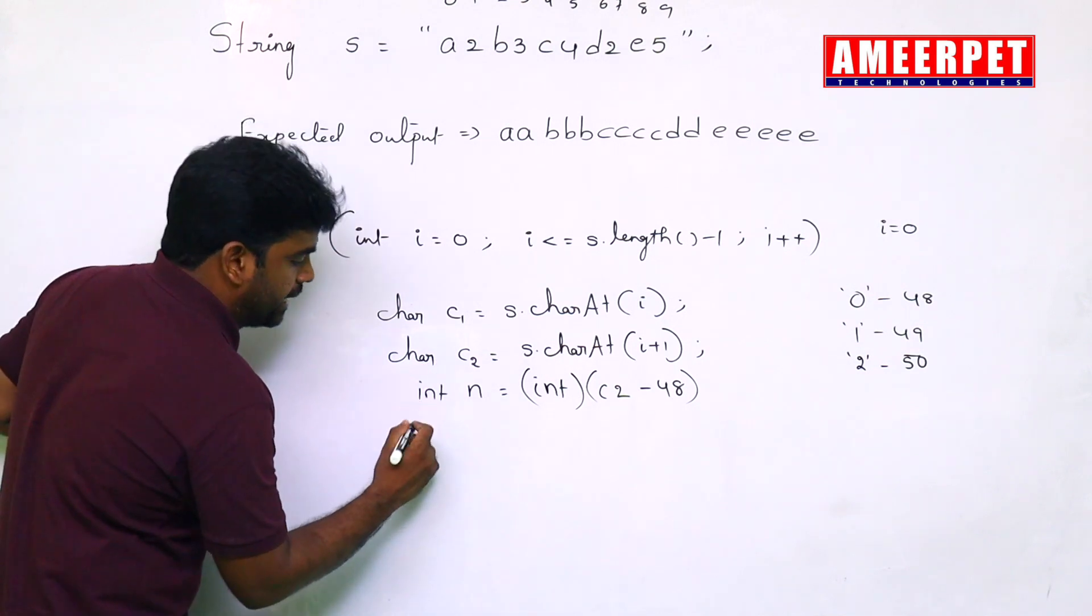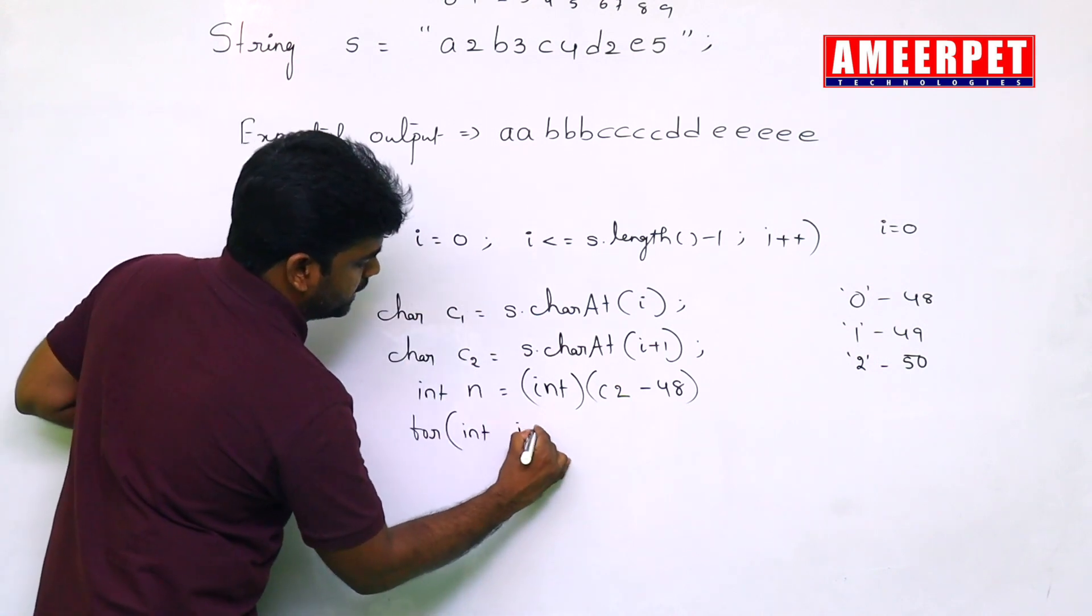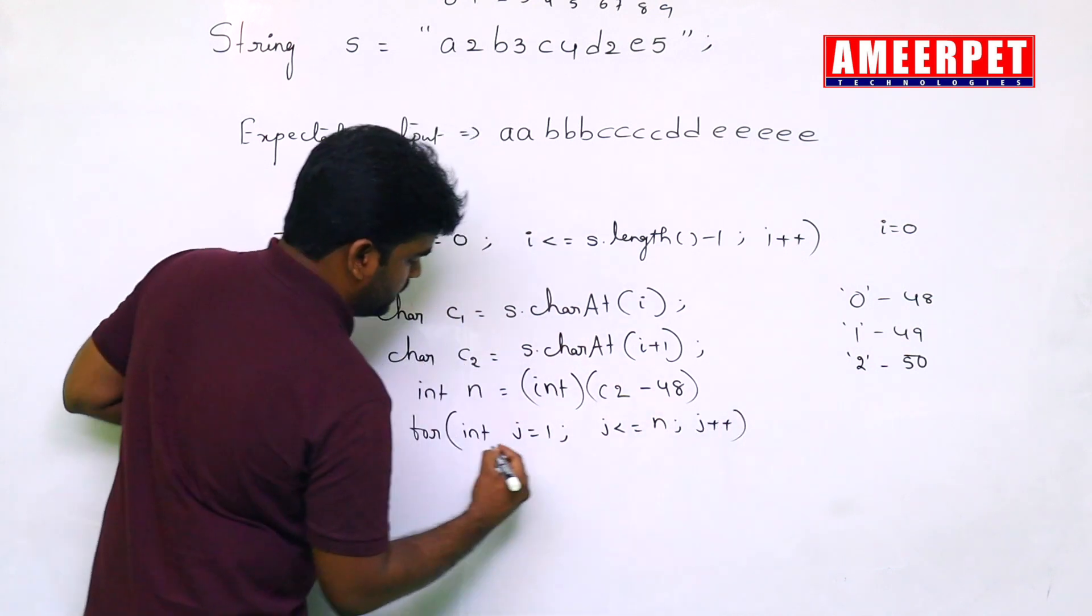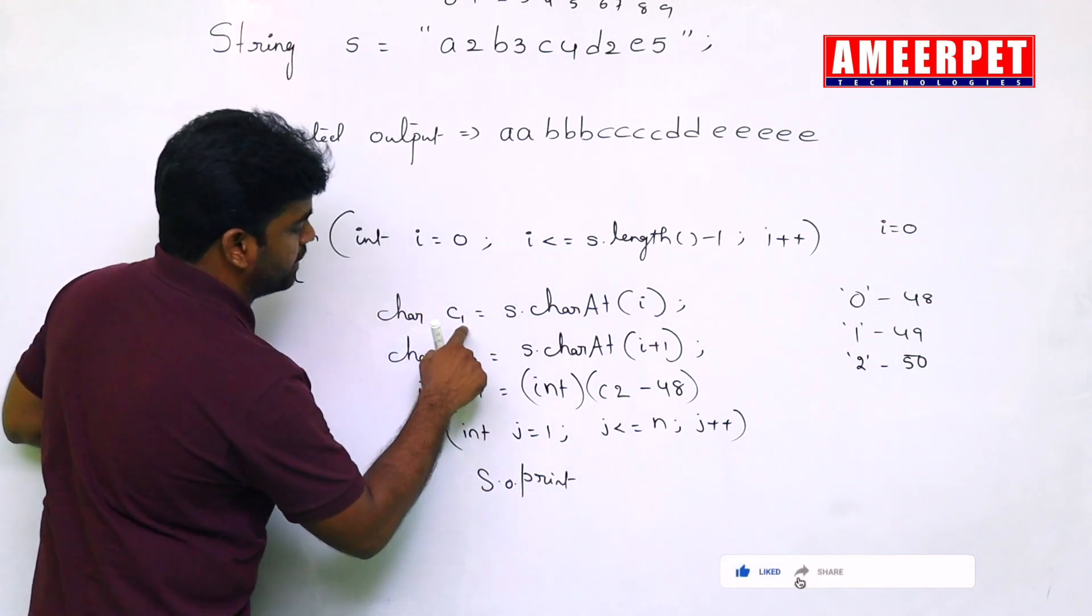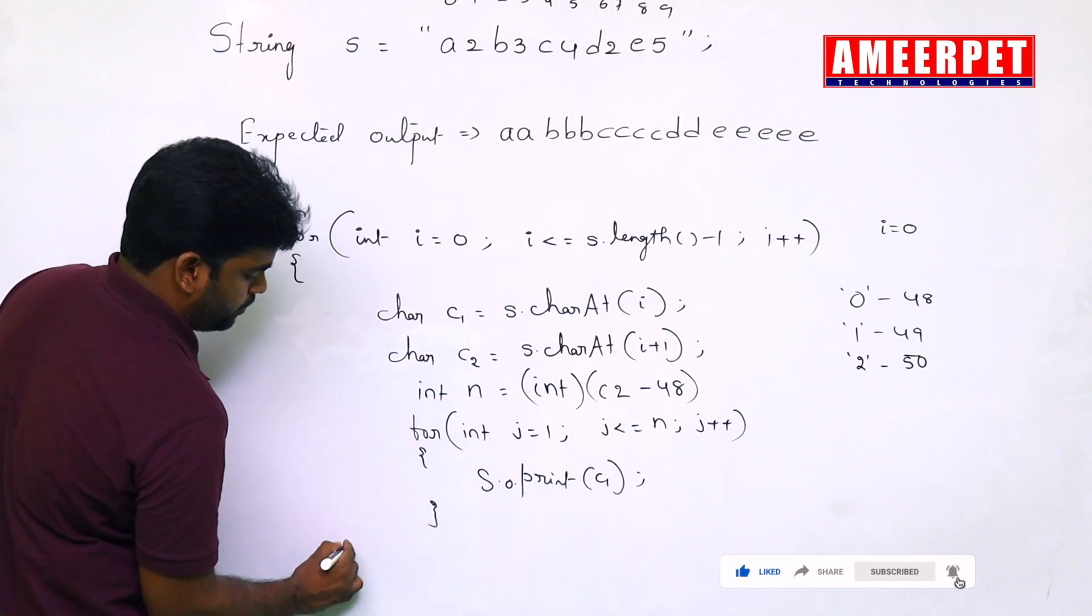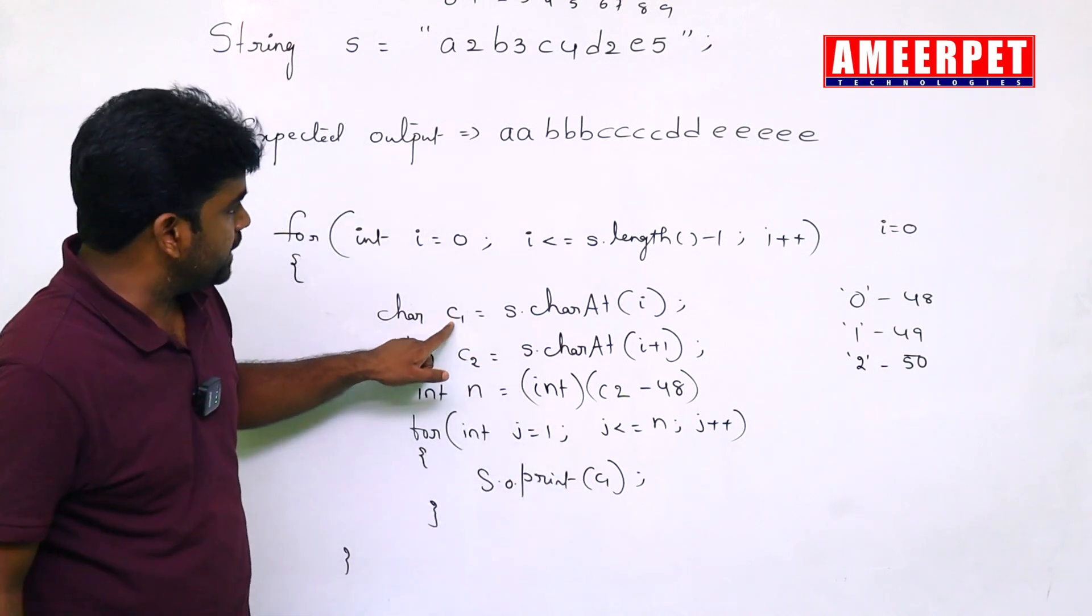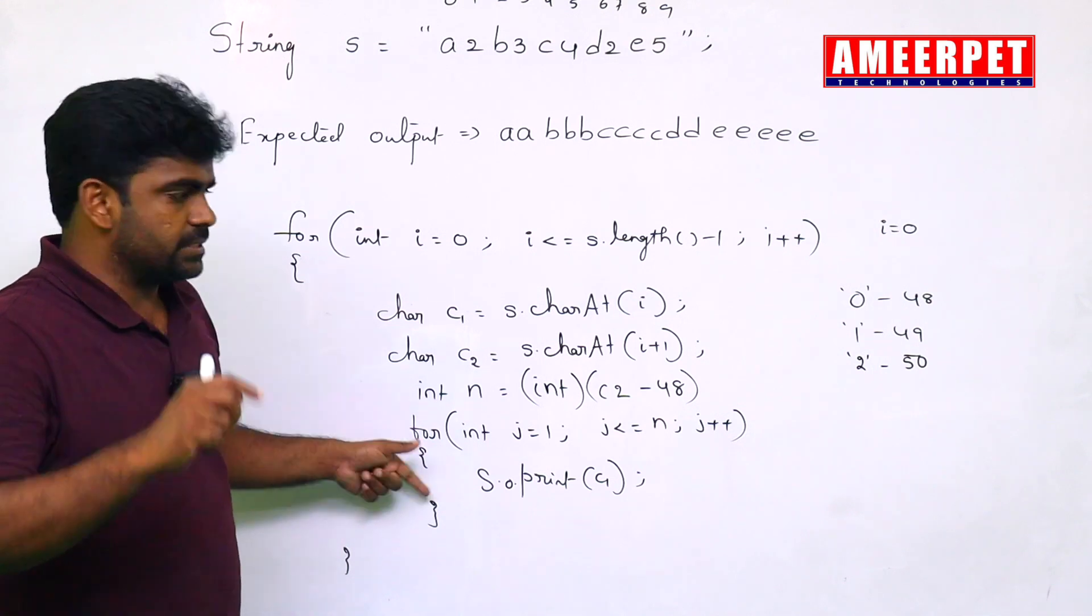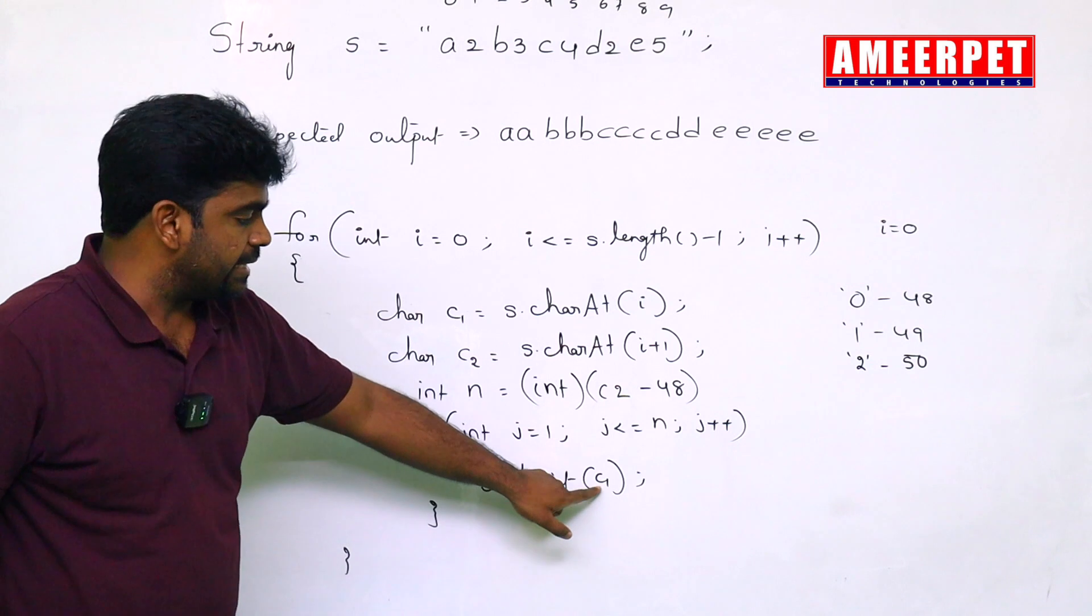Now, repeat the loop n times. For integer j equal to 1, j less than or equals to n, j plus plus. System dot out dot print side by side printing. That C1 printing character. C1, that character, that is A. How many times you are repeating the loop? 2 times. Because n value is 2, 2 times it will print A, A.